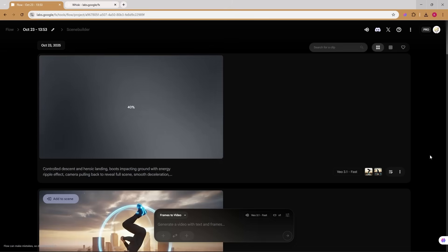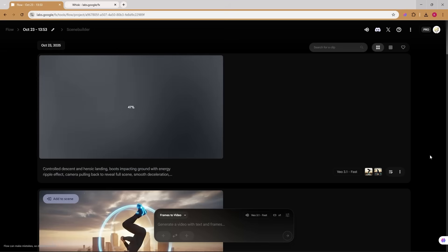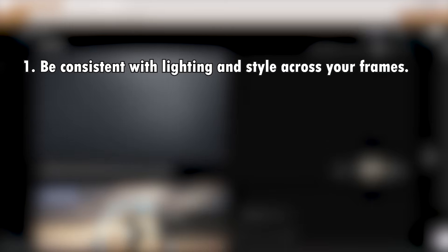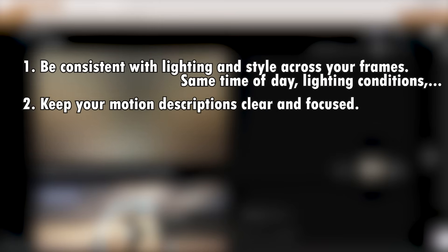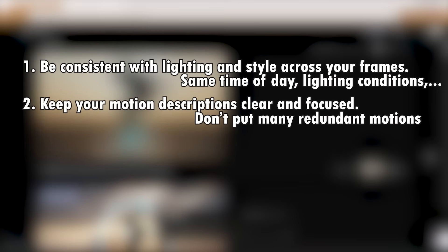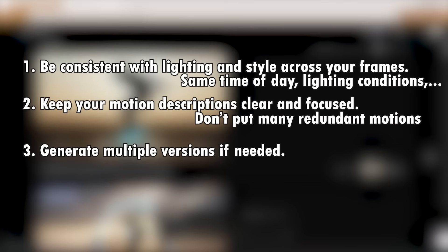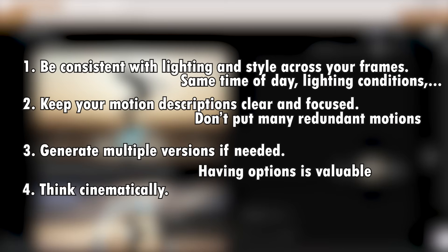Instead of flying cars, we have this. My videos are rendering. With VO 3.1 you'll typically get results in a few minutes depending on server load. Here are my top tips for this workflow: one, be consistent with lighting and style across your frames — mention the same time of day, lighting conditions, and mood in each prompt. Two, keep your motion descriptions clear and focused; don't try to cram too many movements into one five-second clip. Three, generate multiple versions if needed — sometimes the AI interprets movement differently, so having options is valuable. Four, think cinematically — use real filmmaking terms like dolly, tracking shot, push-in, pullback. VO understands this language.